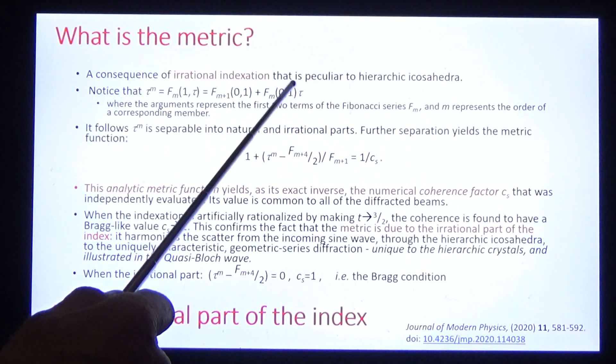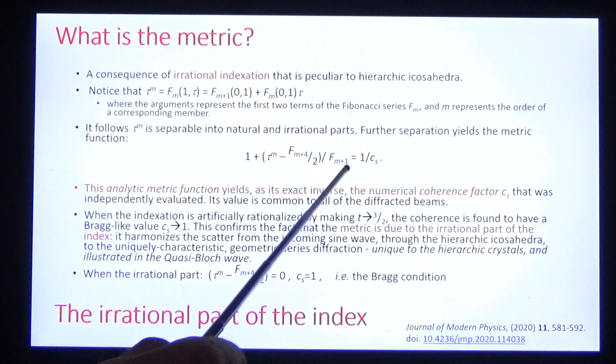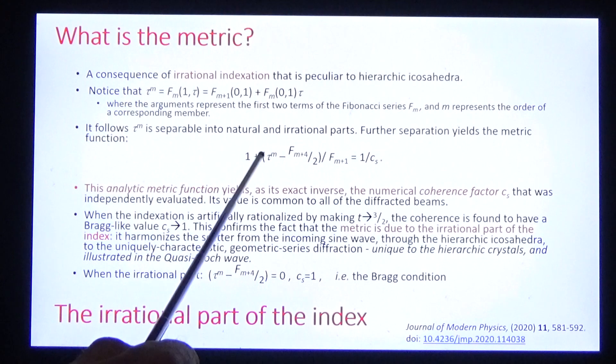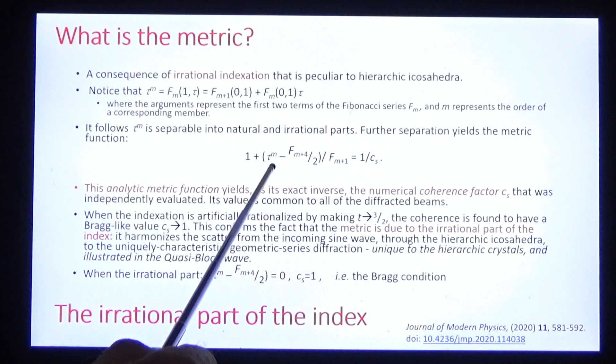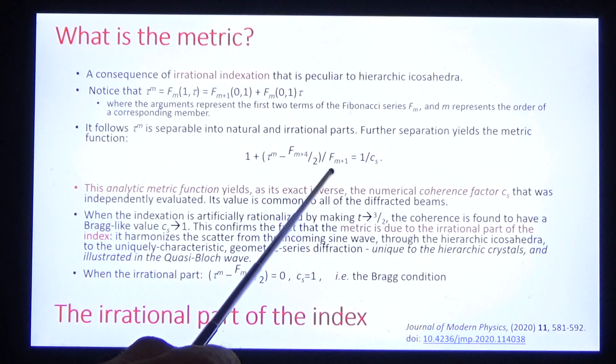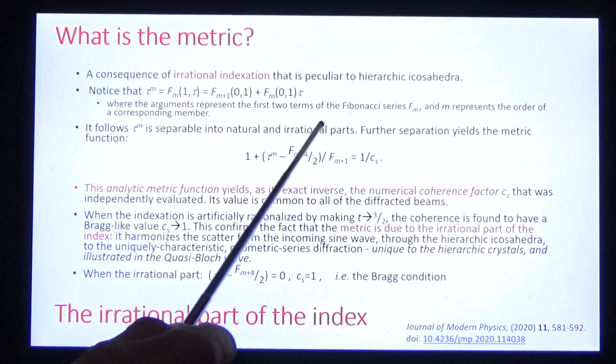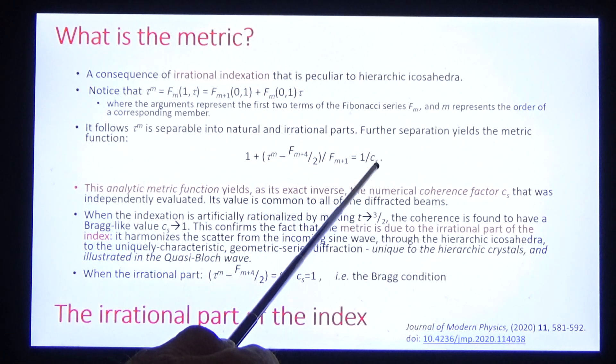We can further naturalize this part and find the metric function. The metric function consists in the irrational index subtracting the natural part to leave the irrational part normalized by another natural number, which I shall illustrate in a moment. And the metric function is the inverse of the metric that we have discovered in the structure factors.